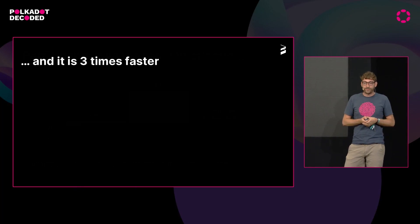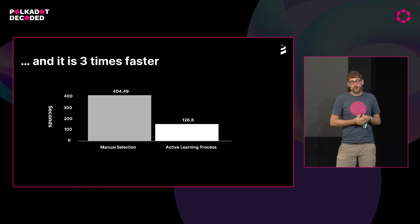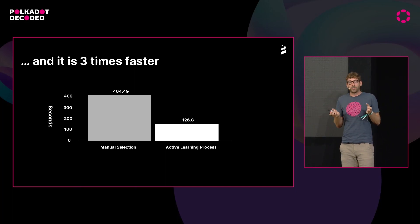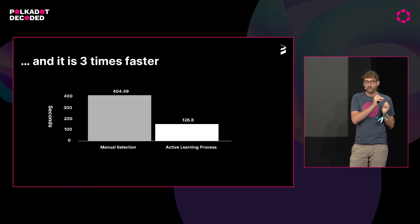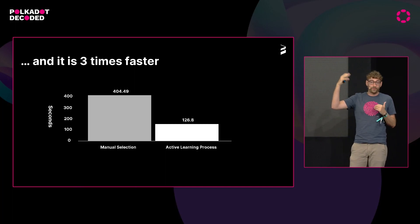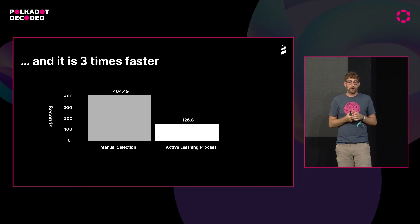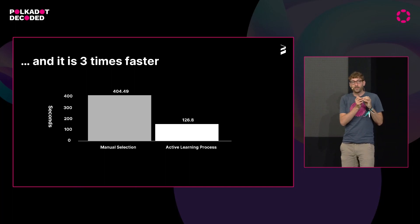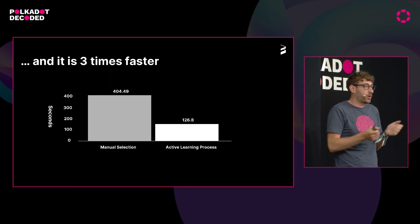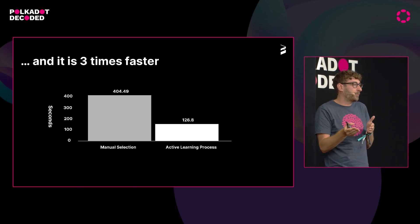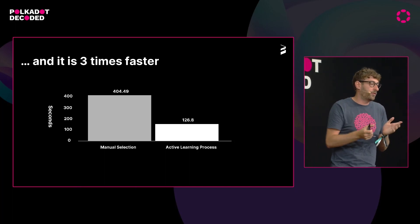The second result is that it's also three times faster. On average it took 404 seconds for them to find seven validators in the manual phase, but the back-and-forth with the algorithm only took 126 seconds. And this result is actually understated, because we only asked them to select seven validators in the manual phase. If you imagine on Polkadot it's up to 16, or on Kusama 24, this goes up quite a lot. Whereas with the active learning process, that doesn't matter — because we can generate a score for every validator and then simply show the best-scoring seven or best-scoring 24. That doesn't change anything on the time consumed for the algorithm, so the manual time would go up higher while the algorithm time stays constant.